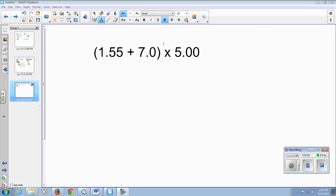So let's look at another example. If we have 1.55 plus 7.0 and then multiply by 5.00, what is the correct answer? So if we do what's in parentheses first, 1.55 plus 7.0 is equal to 8.55.